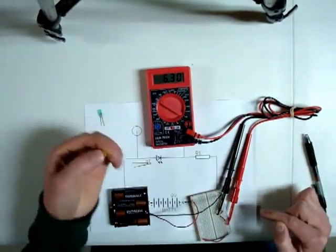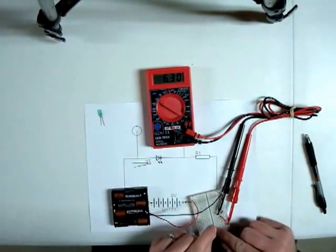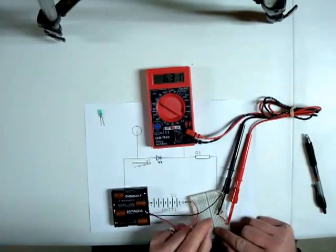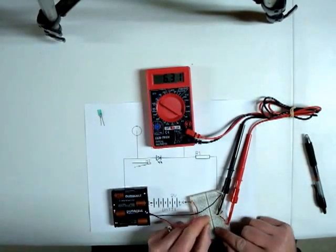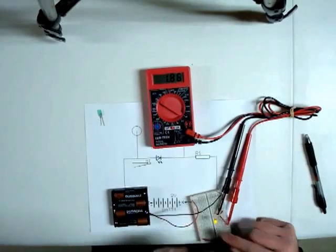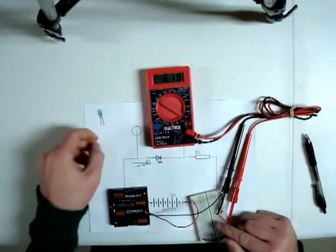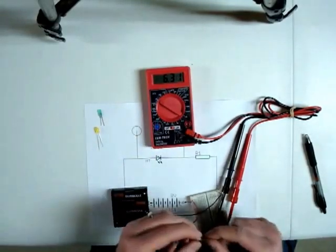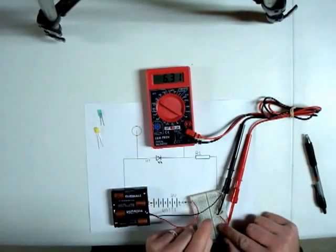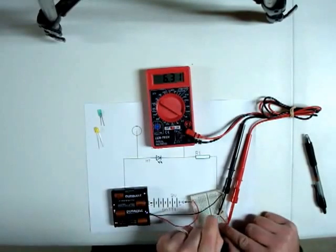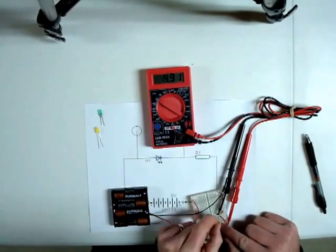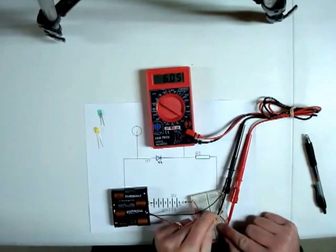So we'll try out a yellow. The yellow is 1.86, 1.85 volts and our other green is 1.96.